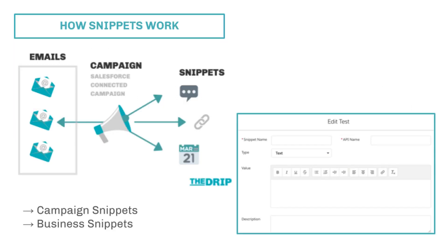How snippets work is that they are associated to a campaign, and then any of the assets related to that campaign can use the snippet. Here's an example of the snippet editor — as you can see it's very simple to use, and I don't think it will be any problem for people to understand how that works.